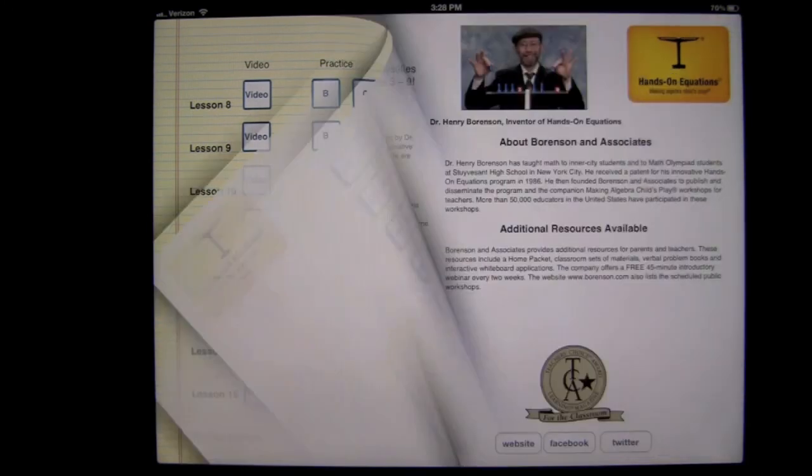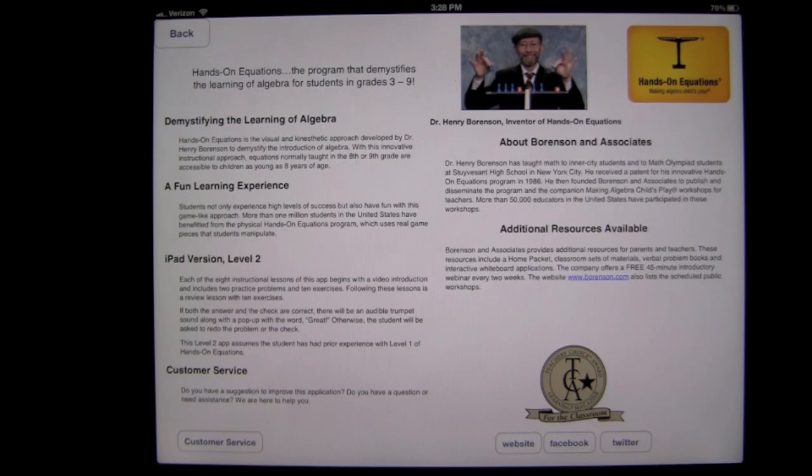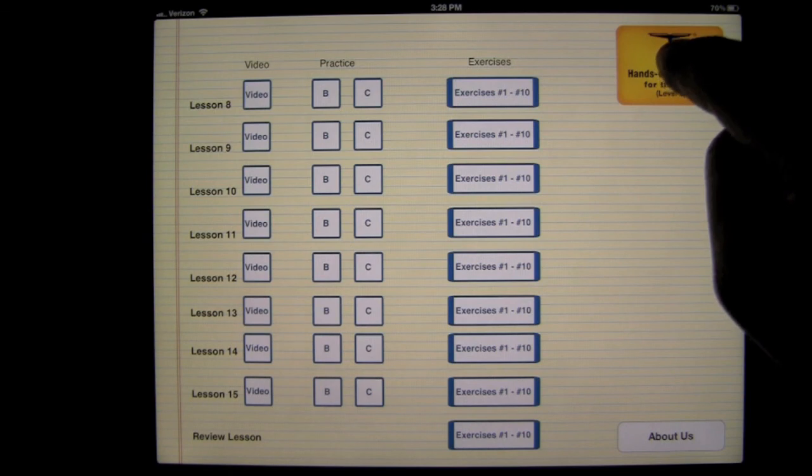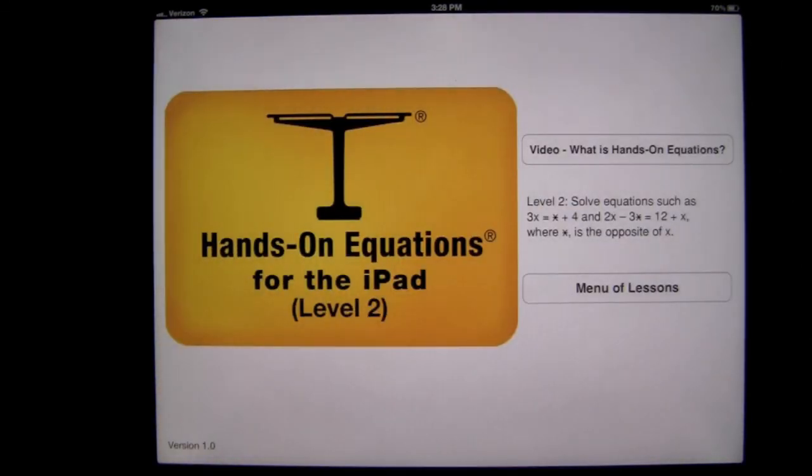Now, you can find out more about Hands-On Equation and Borenson & Associates by tapping on About. And you can always return to the front page by tapping on the emblem up in the top right. There you are. You have your menu of lessons. That's it for this iPad app demo. Until next time, Crazy Mike from Crazy Mike's Apps saying see ya.